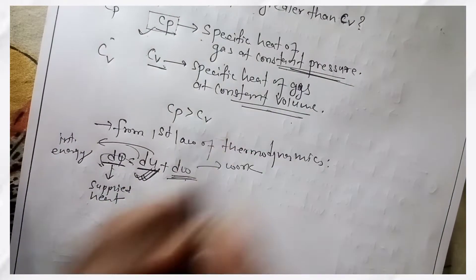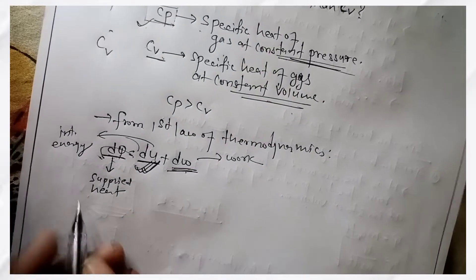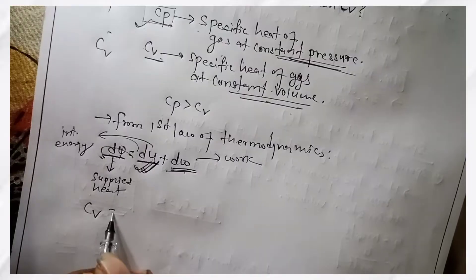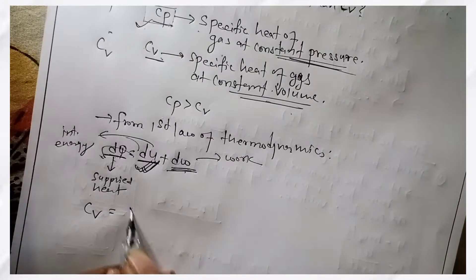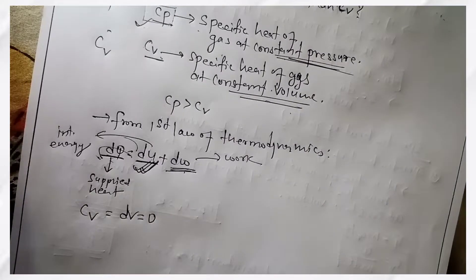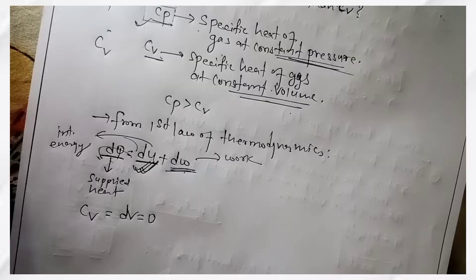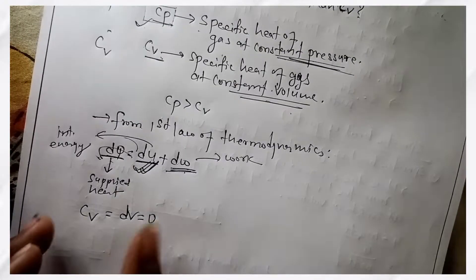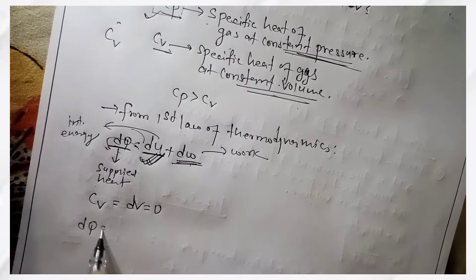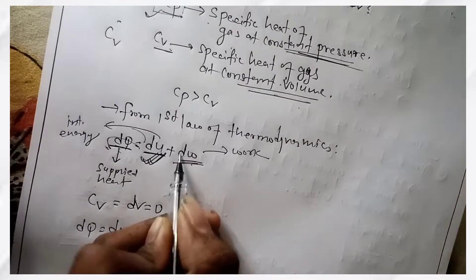Now, we have constant pressure and constant volume. What happens in the Cv case — constant volume? We have dV equals zero. So if there is no change in volume at constant volume, then we apply: dQ equals dU plus dW.